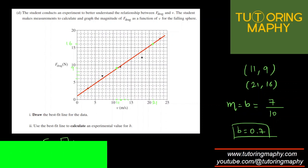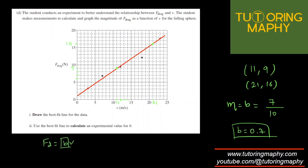So B is going to be 0.7. And that will be the value of B using the line of the best fit. Obviously, your answer can deviate a little bit, but don't worry about it. They allow a little bit of margin.